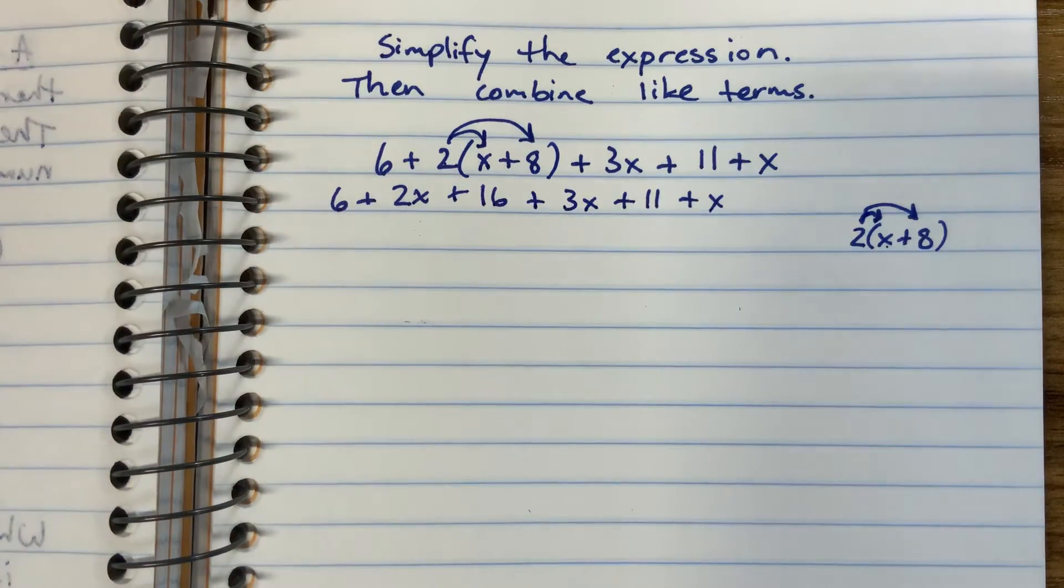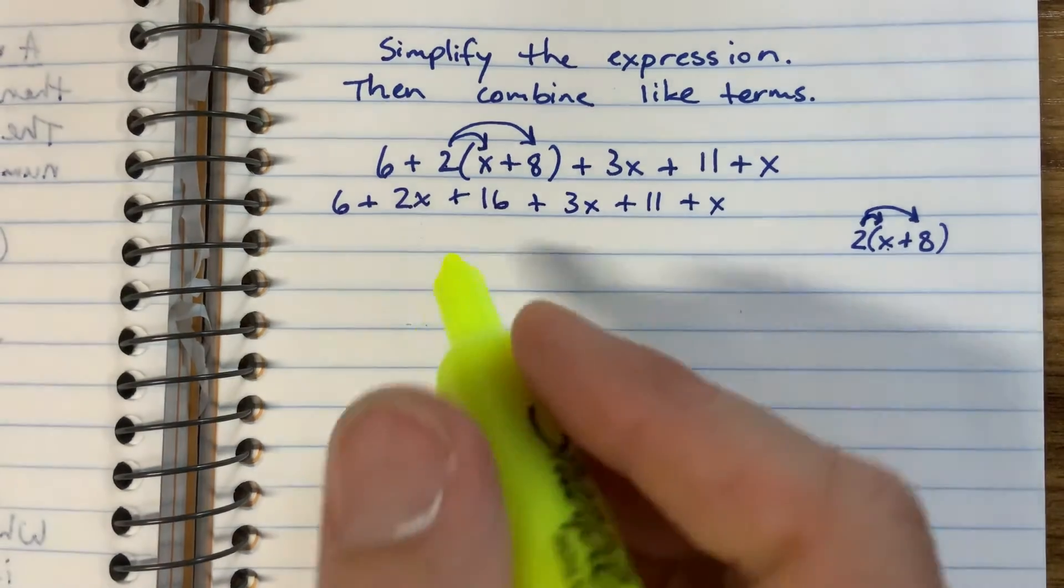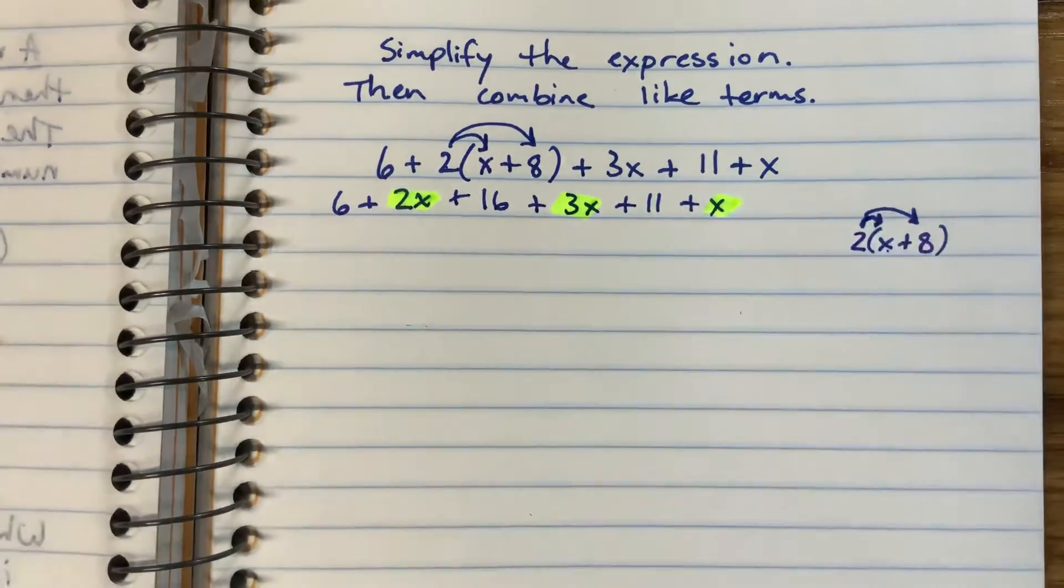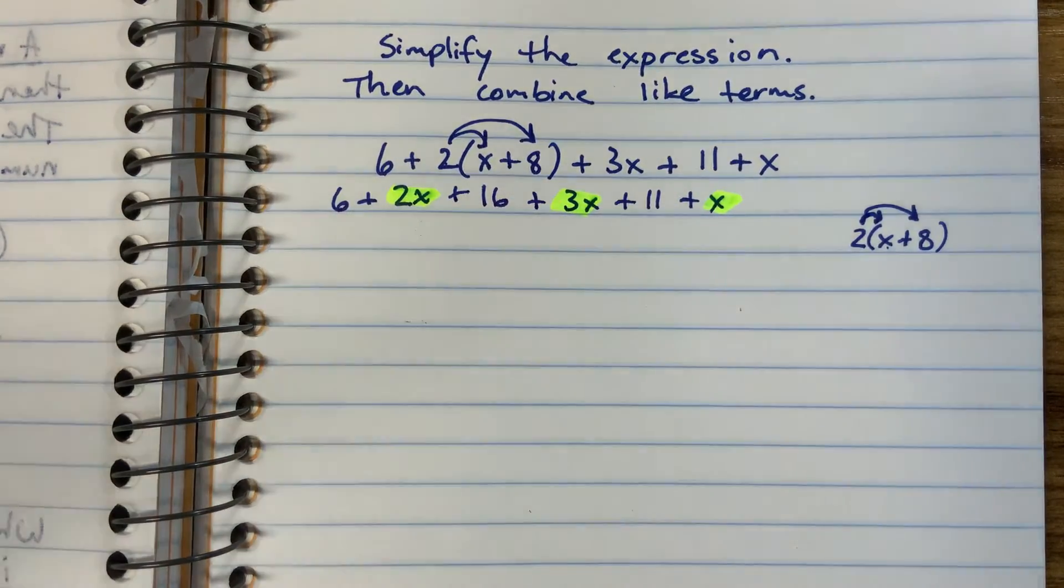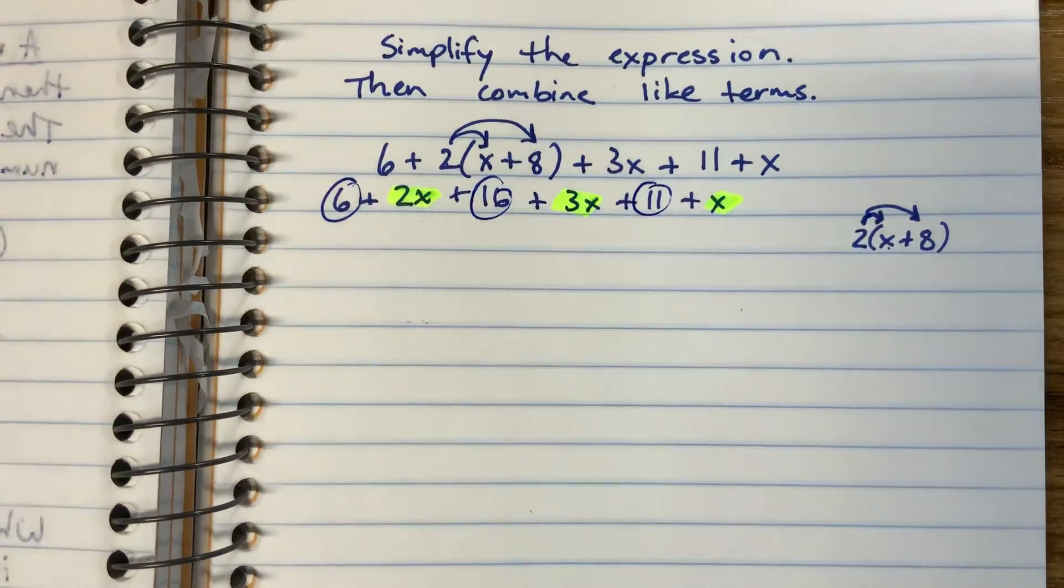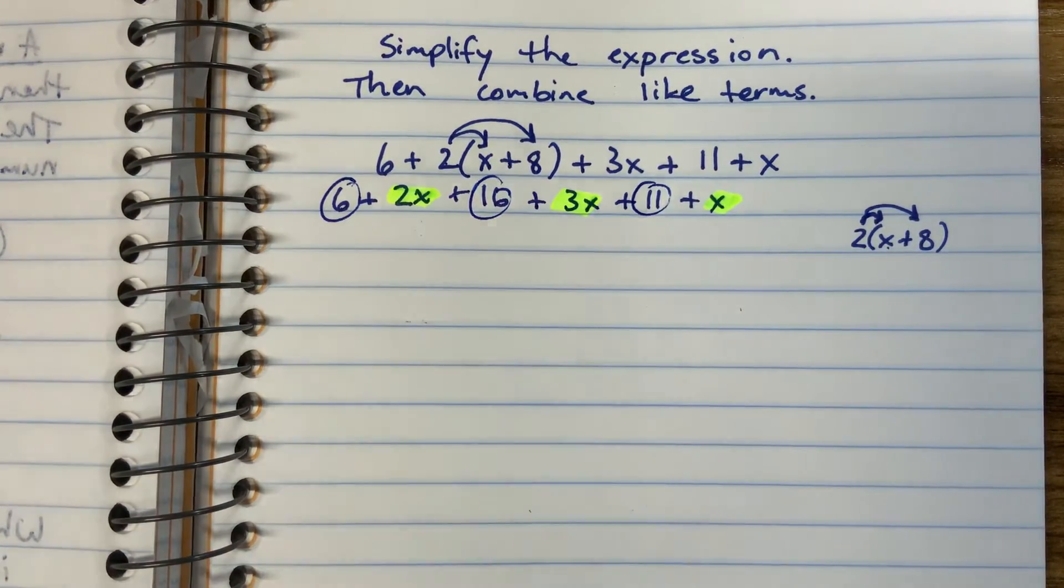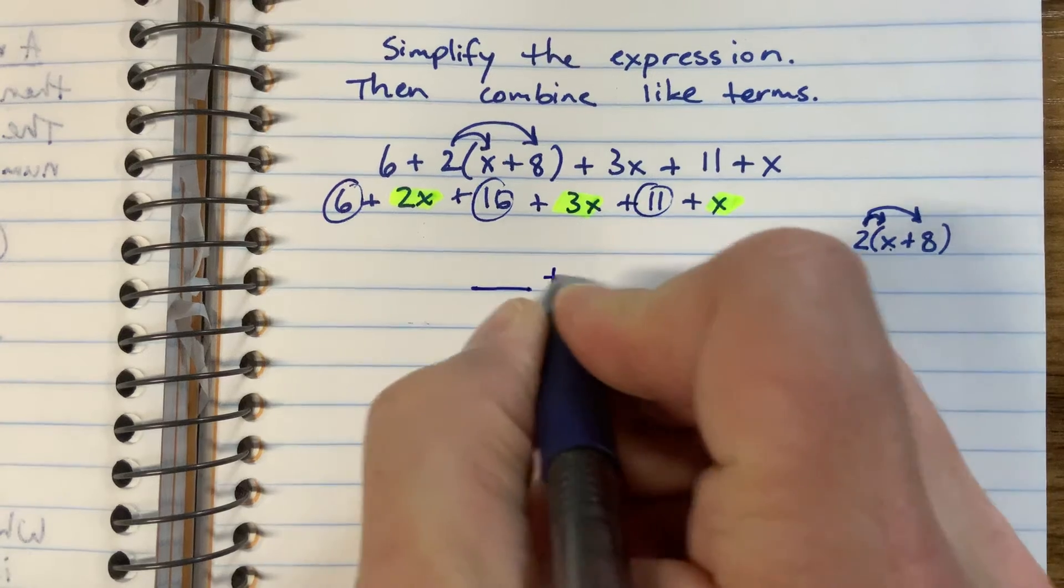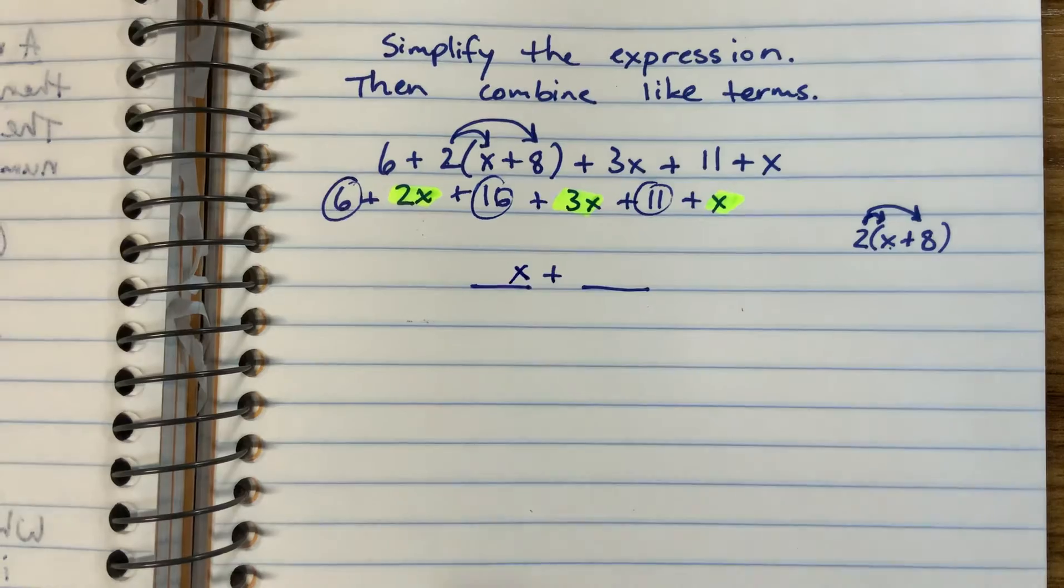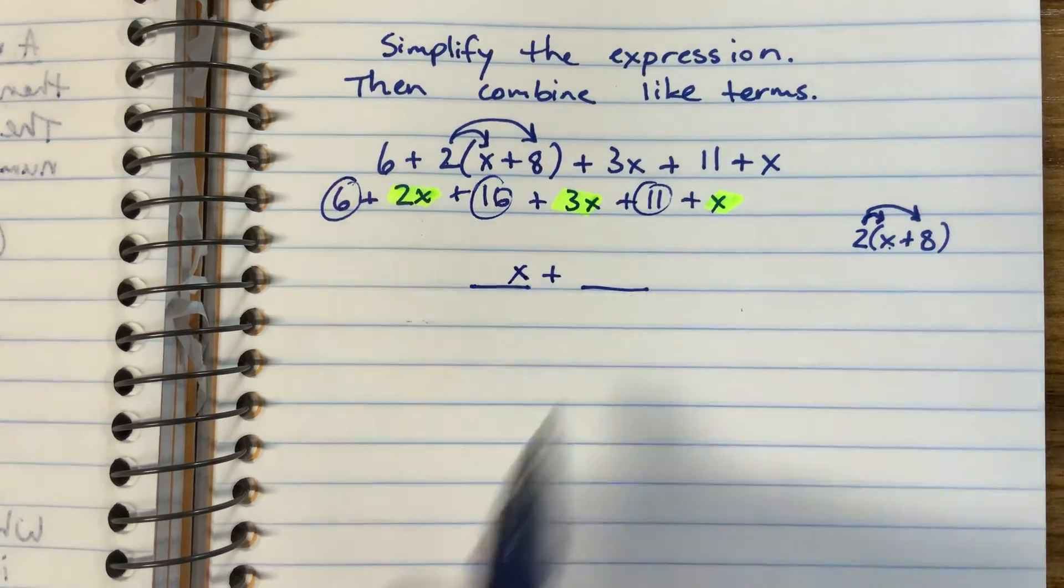I've seen a lot of you put answers down that only have one term. This should have more than one term because we have 2x, 3x, and x. We're putting those together, and then we're putting the 6, 16, and 11 together. So we should have two different things separated by an addition sign.